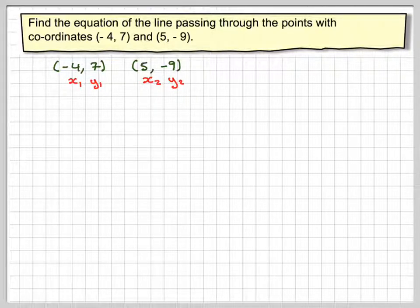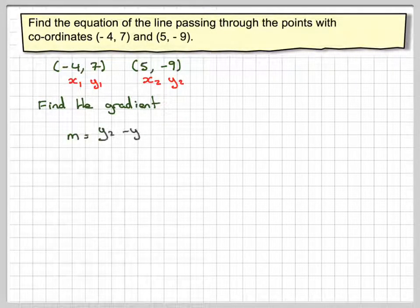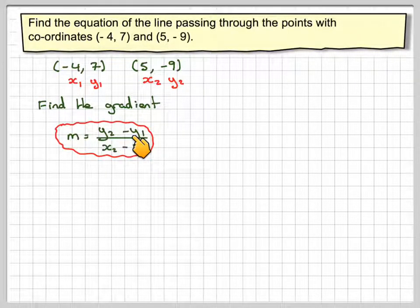So first of all we will need to know the gradient of the line. So finding the gradient of the line using m is equal to y2 minus y1 over x2 minus x1.